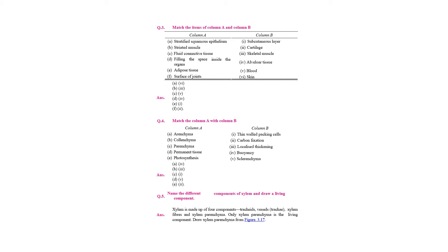The elements of phloem are: sieve tube, companion cell, phloem parenchyma, and phloem fibers. You have to draw the diagram — refer to the previous video session. Question number 7: write true or false.